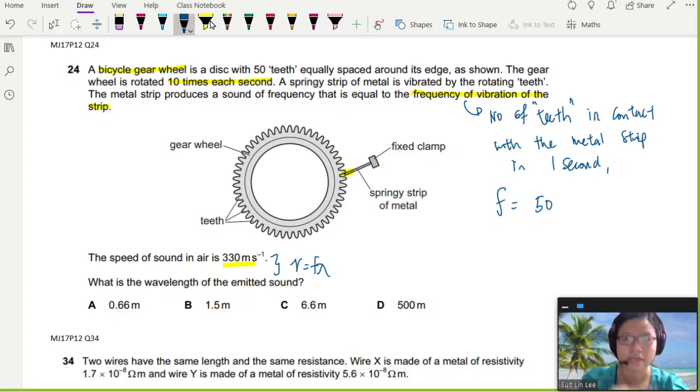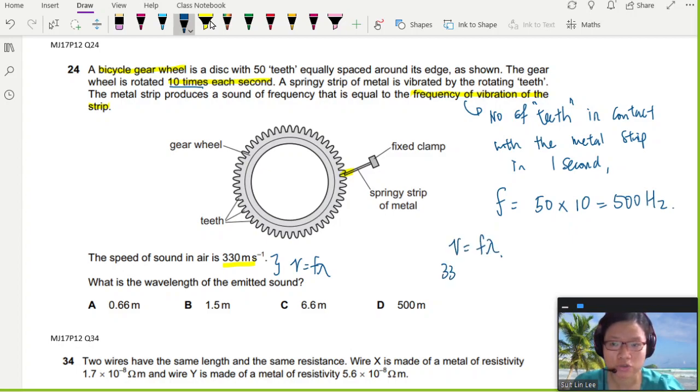So let's see. There are 50 teeth in one cycle in one second, so I will get 500 Hertz. So I can now use v equals f lambda. This is 330, this is 500 times lambda, and you will then get your lambda as 0.66 meters.